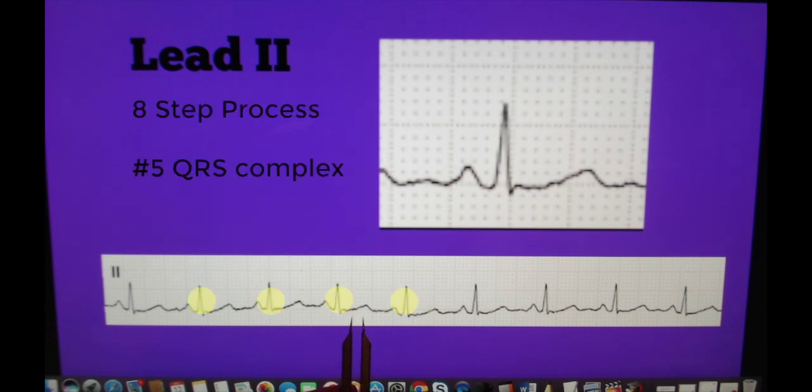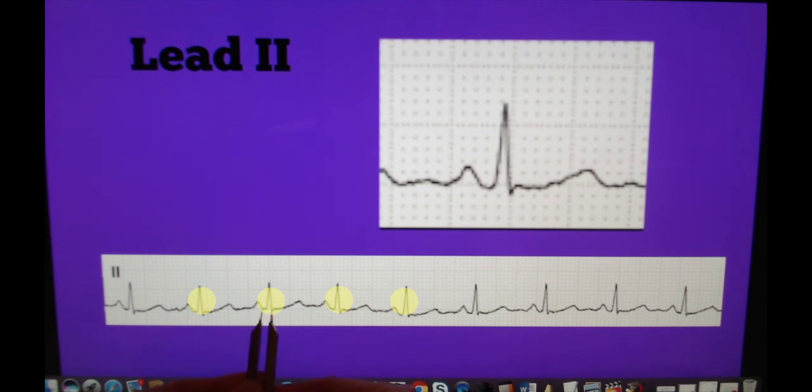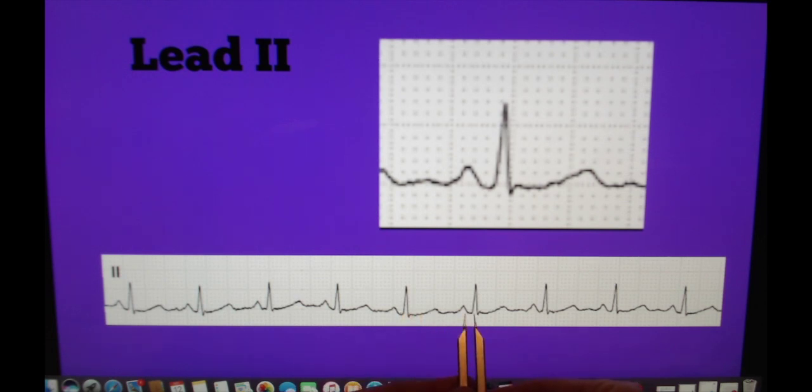In step five we are going to assess the QRS complex. Again using our calipers and measuring all of the QRS complexes on this strip, we find that we have two squares which is equal to 0.08 seconds, within our normal range.